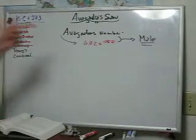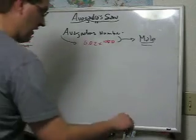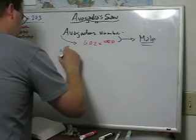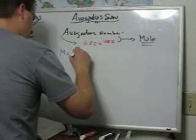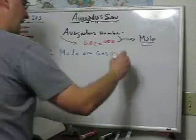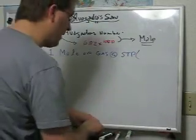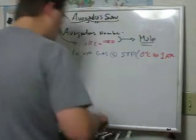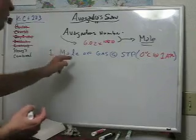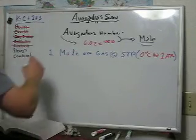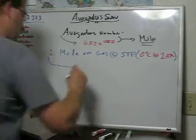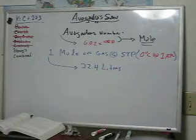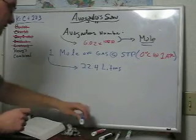Avogadro took this concept even a little bit further and realized something absolutely profound. He realized that one mole of gas at standard temperature and pressure — defined as zero degrees Celsius at one atmosphere, that is STP or standard temperature and pressure conditions — will have a volume of 22.4 liters. One mole of a gas at standard temperature and pressure will have a volume of 22.4 liters.